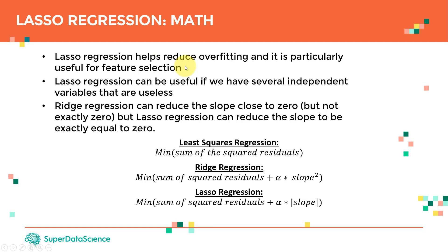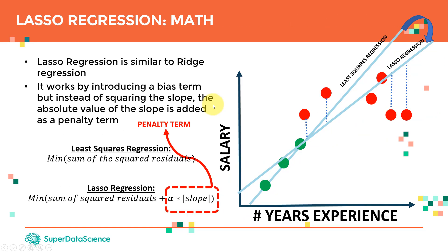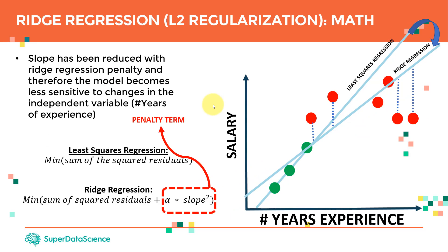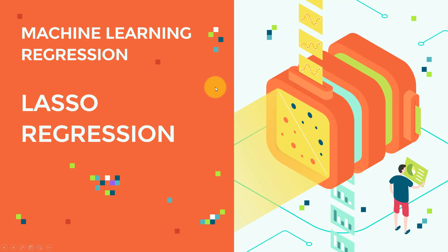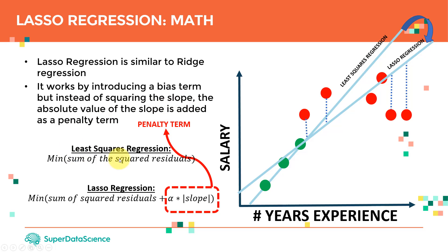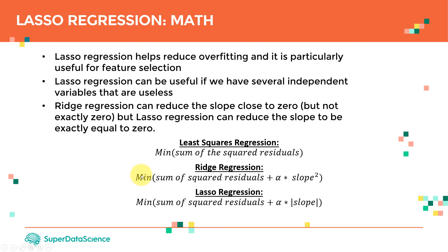I can use lasso to get rid of useless parameters and keep only the ones that are useful. To recap: lasso regression is a regularization technique that works similarly to ridge regression — we add a penalizing term of alpha times the absolute value of the slope. I hope you enjoyed it, and see you in the next lecture.